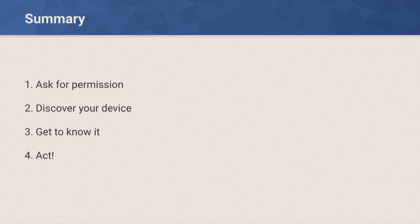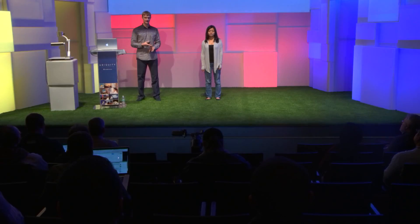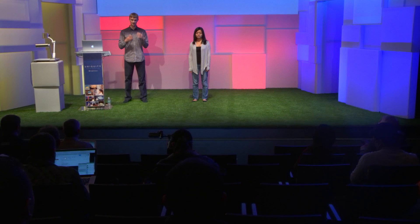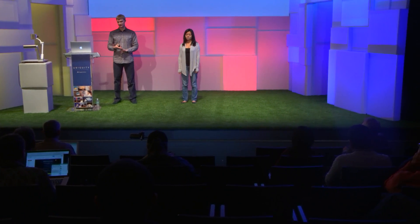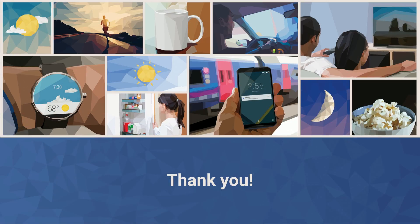To summarize, there are four things you need to do to build a functional application that works with any Weave device. First, ask the user for permission and only do it once. Second, find the device you're going to work with and shut down discovery as soon as you don't need it. Third, get to know your device — is it ready, does it have the right features, what can you do with it? And fourth, act on your device by creating a command and sending it for execution. We'll have Codelabs tomorrow where you'll be able to get your hands on our new APIs and try building a functional Weave application yourself — within an hour you should be up and running and working with any Weave device out there.